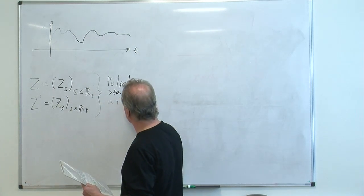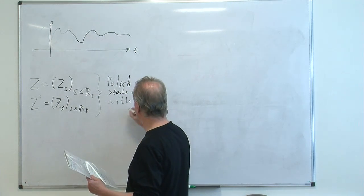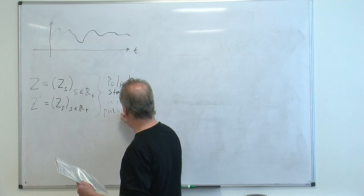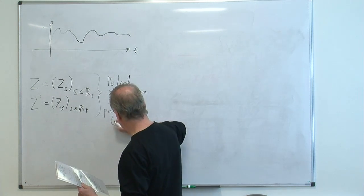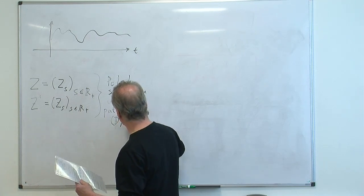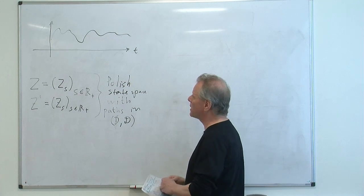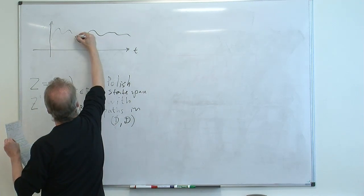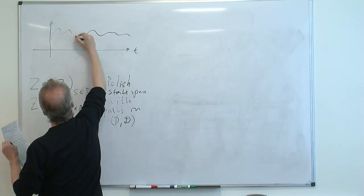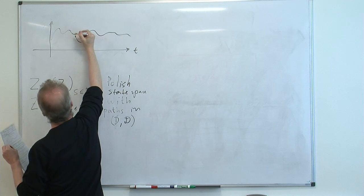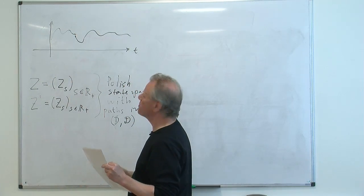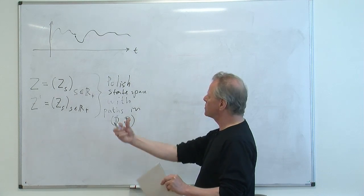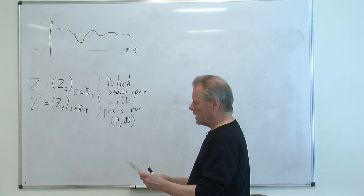For technical convenience, I put this as a condition with paths in D-space, the Skorohod space. So this means simply that the paths are not continuous as I drew them here, but they have limits from the right. They are continuous from the right, and they have limits from the left. So they can be quite wild, but it should be right-continuous with left-hand limits.